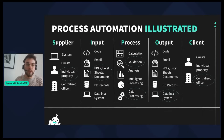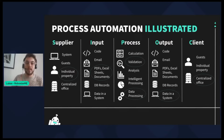To illustrate all the possibilities that process automation has to offer, I will use something called a SIPOC chart. This chart consists of five process stages: supplier, input, process, output, and client.